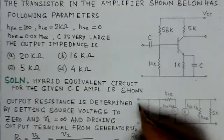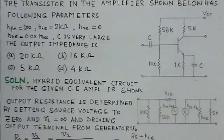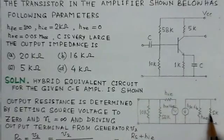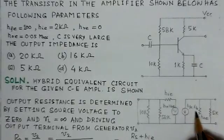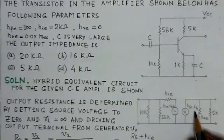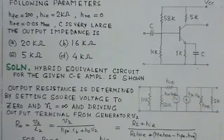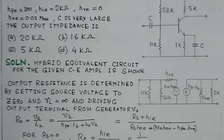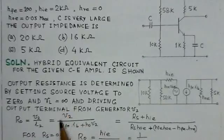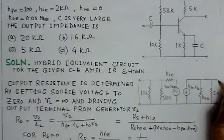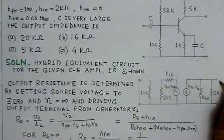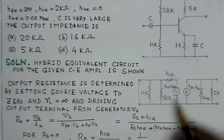That means we have to set this input to be 0 and we set the AC load resistance to be infinite, because we want to find only the output impedance or output resistance of the transistor only. Then RL is set to infinite and R0 would be given by V2 divided by I2.